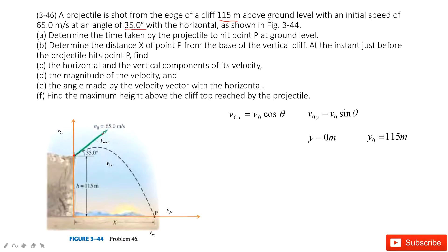Because the initial velocity is at an angle theta in projectile motion, we solve problems in two components: x-component and y-component. We must project the initial velocity v into x-component and y-component. The v in the x-component is v cos theta, and the v in the y-component is v times sin theta.